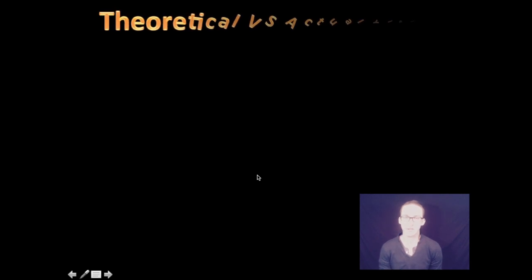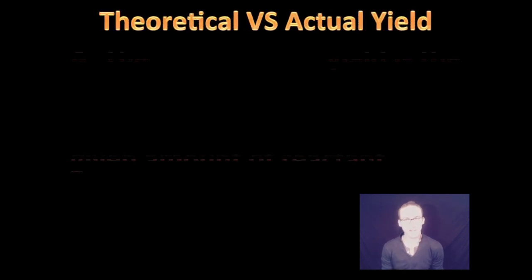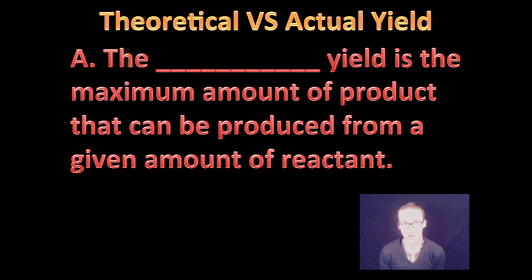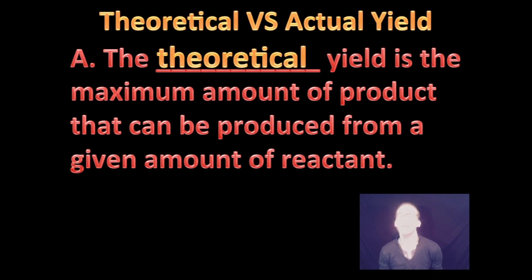All right. So the big terms that you need to know for today's video is first our theoretical yield. And this is just the maximum amount of product that can be produced from a given amount of reactant. So in theory, if everything goes perfectly, how much should we expect to get?